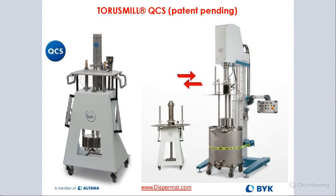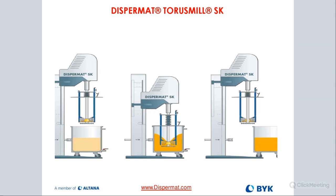Here is the quick change system with the trolley that allows you to make the change very quickly. You lift it underneath, open up the quick clamping ring on top, remove it, turn the whole assembly 180 degrees, pull it out, and replace it with either the basket mill or the dissolver shaft depending on configuration. Very nice design. The graph shows you the SK basket mill — put the product in, mill, and then you're done.